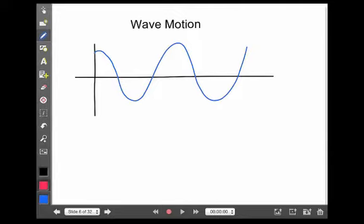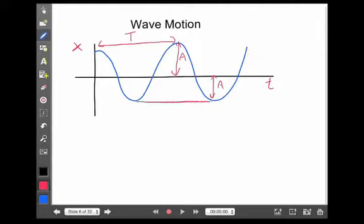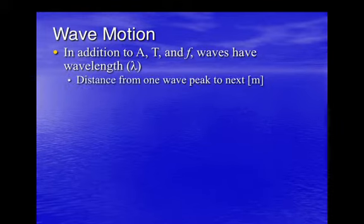On a typical wave, as shown here, the amplitude would still be our maximum displacement from equilibrium, so it could be on either side. The period, if this was a displacement-time graph, is measured from the time to go from one peak to the next or one trough to the next. But in addition to that time, there is a certain distance covered going from one peak to the next. That distance is what we call the wavelength — the distance measured from one peak of a wave to the next, measured in meters.